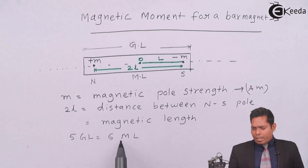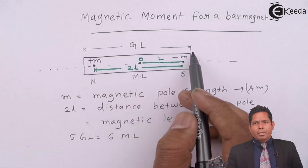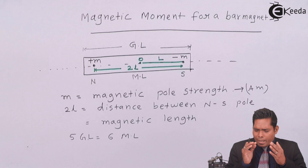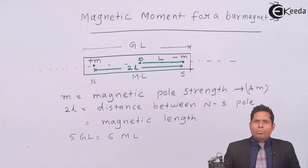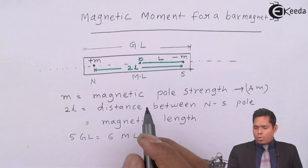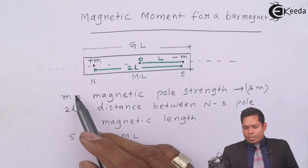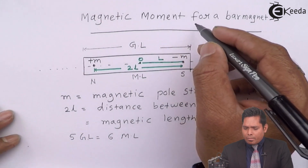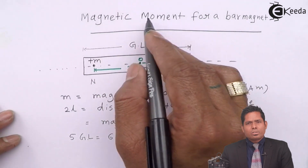There is a relationship: the magnetic length equals 5/6 times the geometric length. The geometric length can be measured using a measuring tape, and multiplying that by 5/6 gives the magnetic length, that is the 2l value. We then multiply 2l with m to get the magnetic dipole moment.